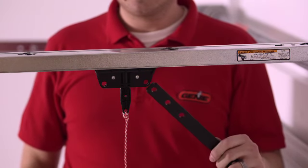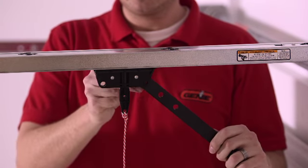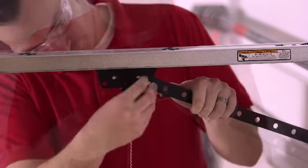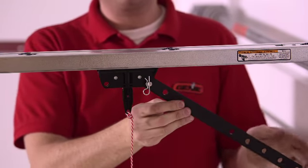Insert the straight door arm into the door end of the shuttle and slide the clevis pin through the aligned holes. Place the cotter pin through the clevis pin hole.